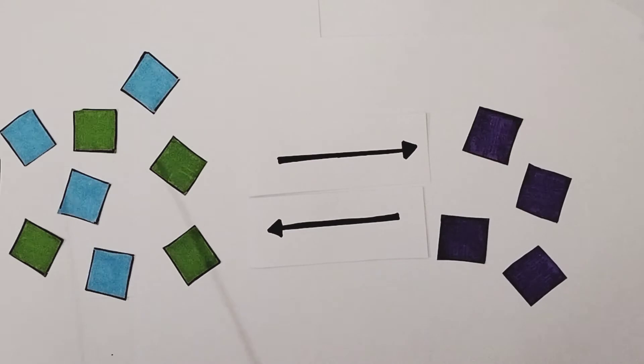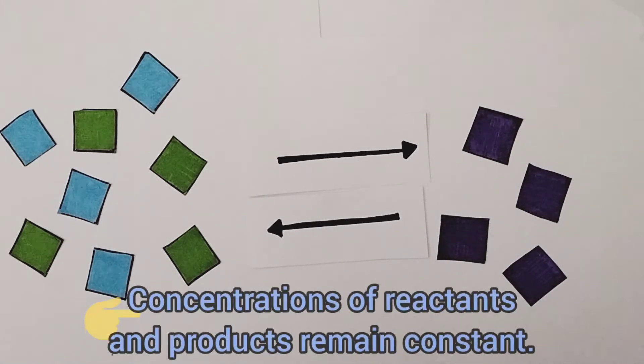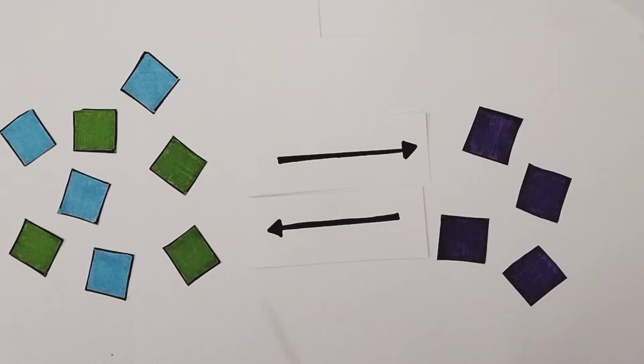There are eight reactant molecules compared to four product molecules. It would be misleading to say they have the same or equal concentrations, but they do have constant concentrations. There will always be proportionately about eight molecules on this left hand side and proportionately about four molecules of products on the right hand side. Their concentrations are remaining constant because the rate at which we're forming the product is equal to the rate at which we're forming the reactant. They're never really changing these constant levels and therefore the concentrations remain constant. So hopefully the animation helps to support that definition from earlier on.